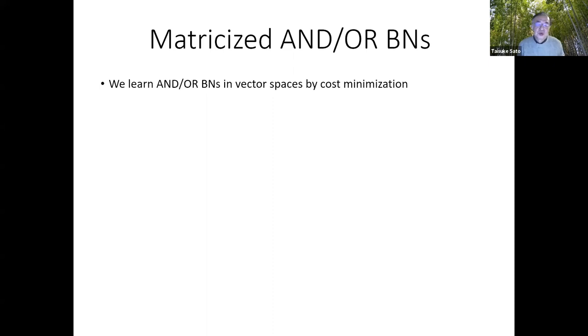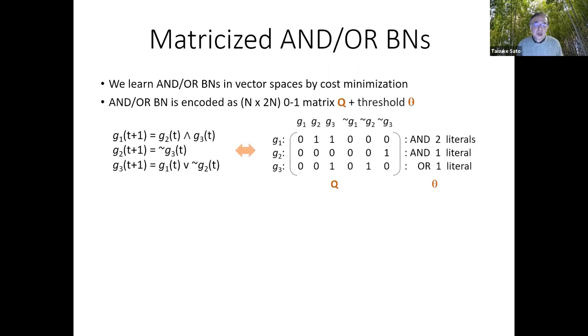However, what we actually want to do is learn AND/OR Boolean networks in vector spaces by cost minimization. To do so, we encode an AND/OR Boolean network by a pair of binary matrix Q and integer threshold vector theta. Look at G1. The G1 has G2 and G3 as its transition formula. So we put one here and here corresponding to these literals. And we also set the theta one to two. This number means a number of literals to be true for the transition formula to be true, because there are two goals to be true.